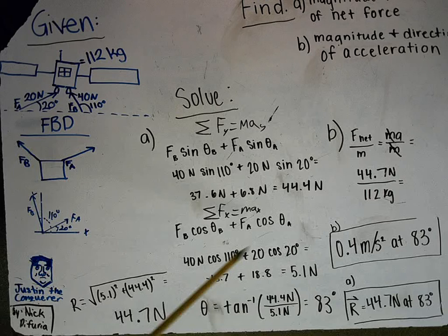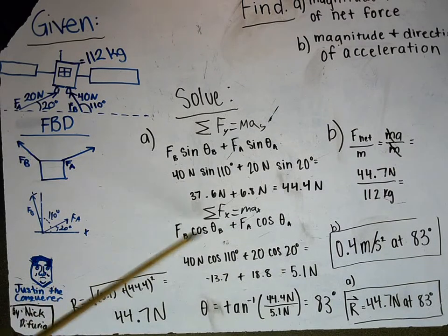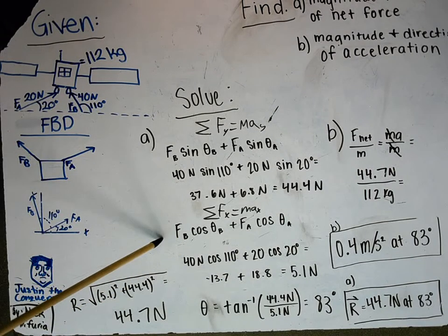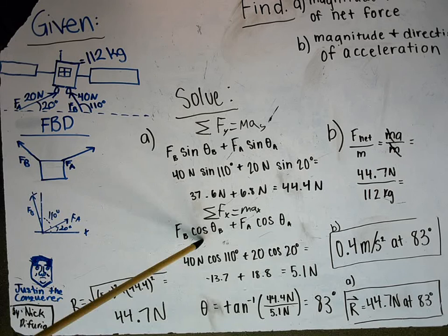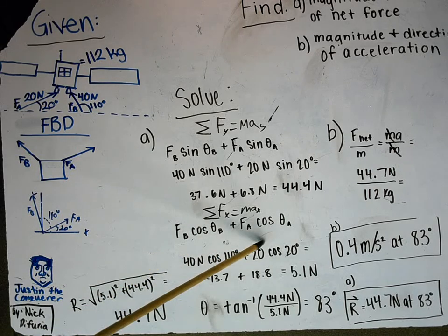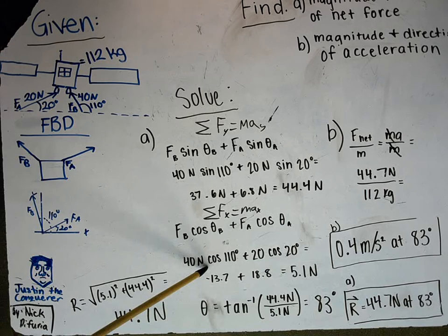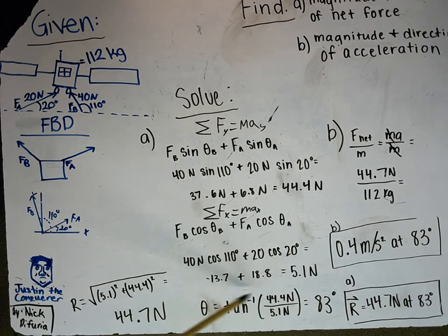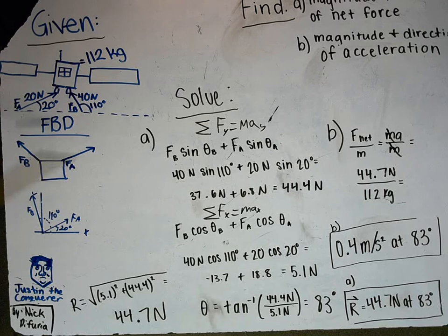In the X direction, we do the same thing but we have cosine plus cosine. Here's the X component of B, the X component of A. Use cosine to get these components. When you add them together, notice these are opposing each other, and so they have a force on the satellite of 5.1 Newtons.